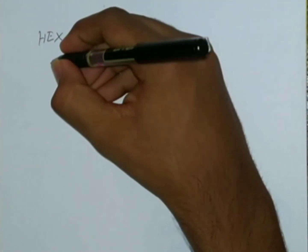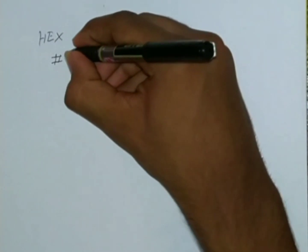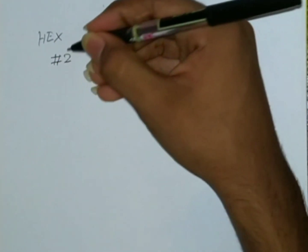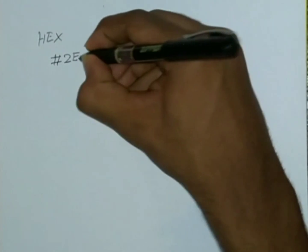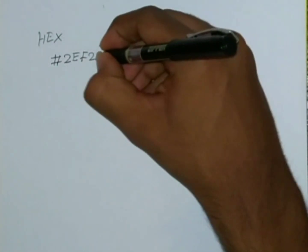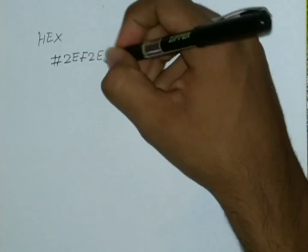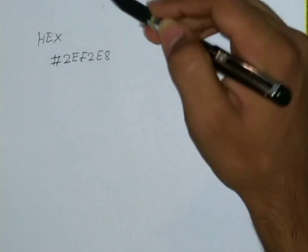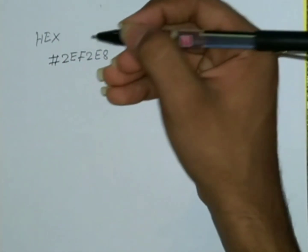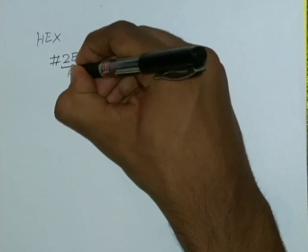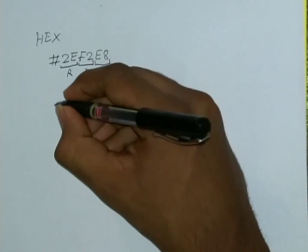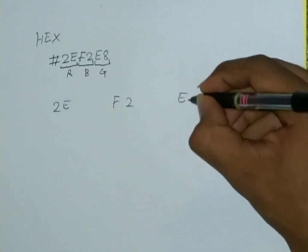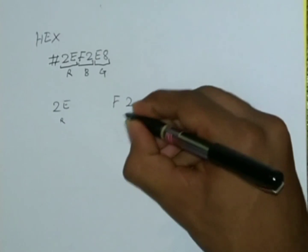So now coming to the hex color system, which stands for hexadecimal. They look like this — they start with a hash and then the hexadecimal digits, maybe 2EF2E8. So there is not really a separation like RGB, but it's actually separated by two digits. So this is gonna be the red, and then this is gonna be the green, and then this is the blue.